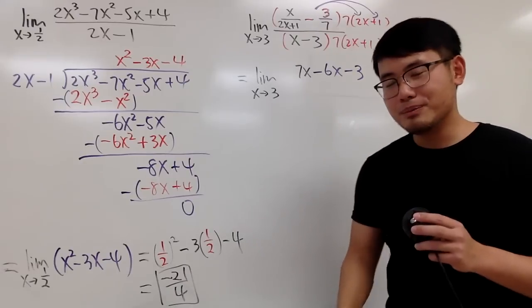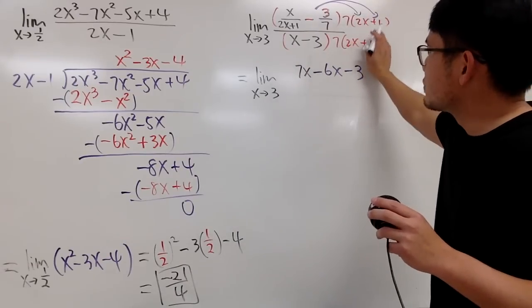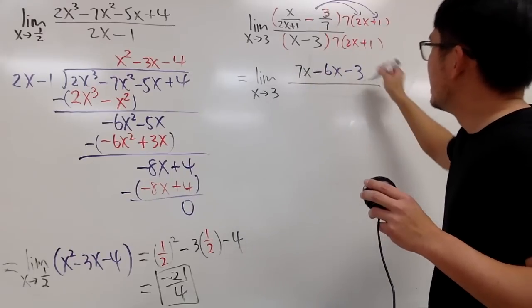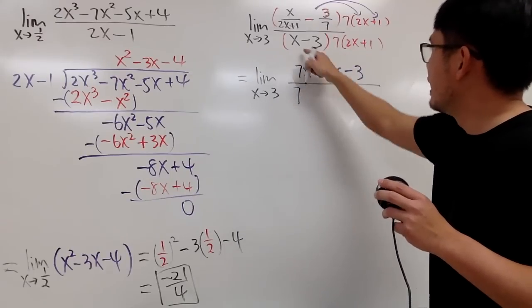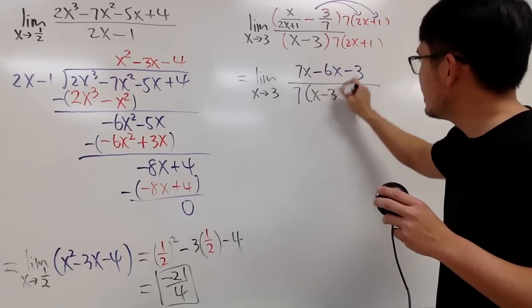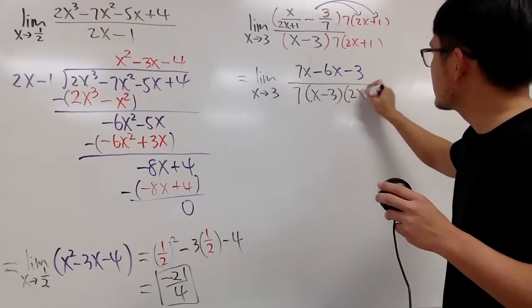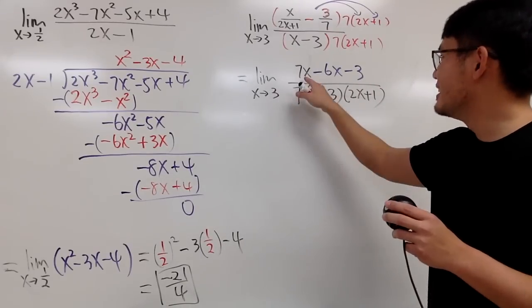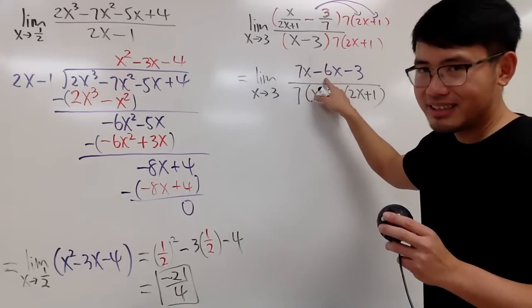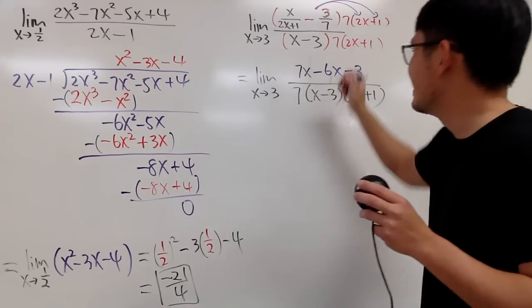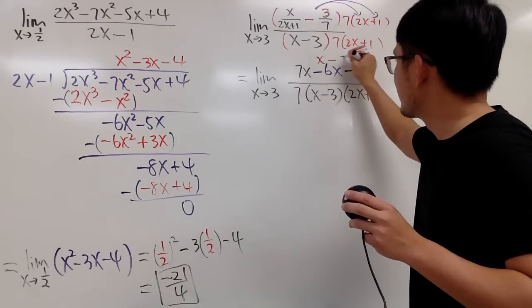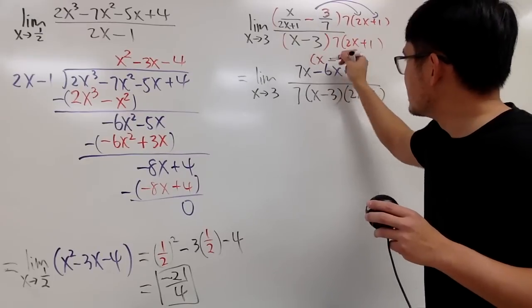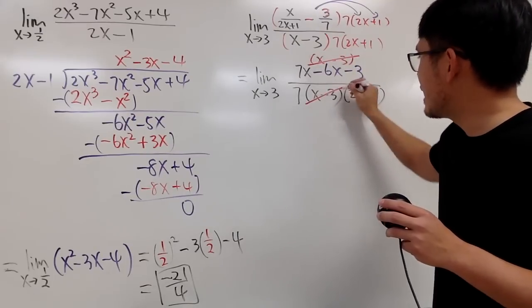On the bottom, well, the purpose of doing this was to fix the top. So, on the bottom, I will just keep it as how it is. Perhaps I'll write down 7 first. And then this, which is x minus 3. And then that, which is 2x plus 1. Now, on the top, you see 7x minus 6x. That's nicely equal to x. And then, of course, we have the minus 3. So, as you can see, the top is just this. I can cancel this one with that one out.